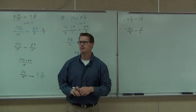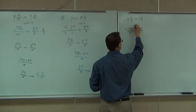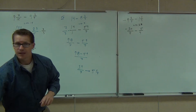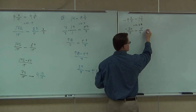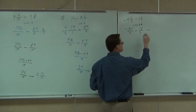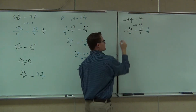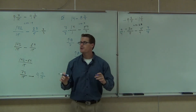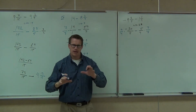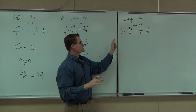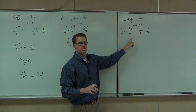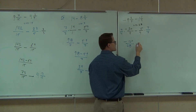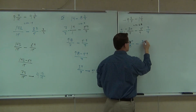Can you find me the LCD? 28. Good. Left side of the room, what do you multiply this fraction by? Seven. Right side — four. We can't lose those negative signs. When I do my multiplication, I get negative 120 over 28 minus 35 over 28.